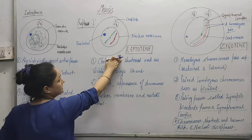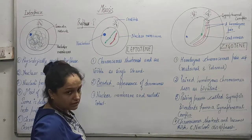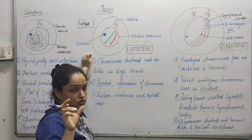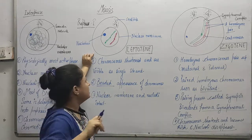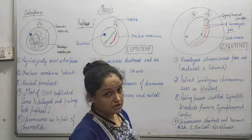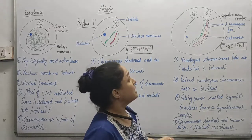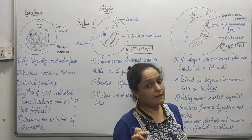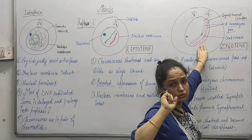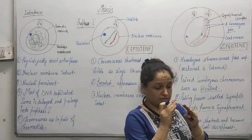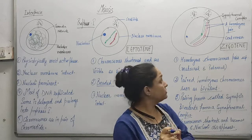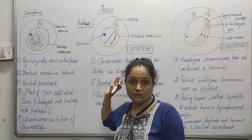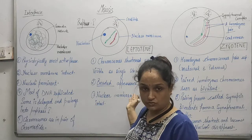To make it clear: in Leptotene, the chromosomes first appear from their chromatin form. The chromosomes condense and show beaded appearance. In Zygotene, they make a pair — the homologous chromosomes pair up forming the synaptonemal complex, also called a bivalent or homologous pair, consisting of one chromosome from the mother and one from the father. The remaining phases — Pachytene, Diplotene, and Diakinesis — will be covered in the next video.